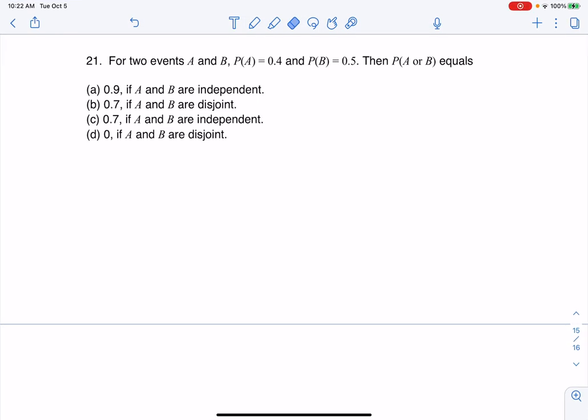Hey everyone, let's take a look at this last one. So for two events A and B, we've got the probability of A, probability of B, and then they're asking us for the probability of A or B.